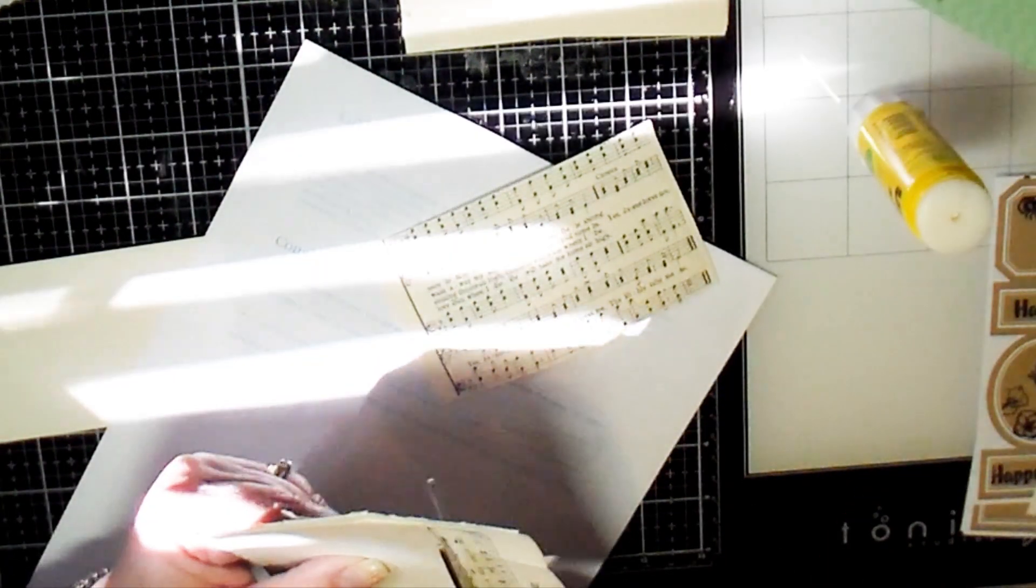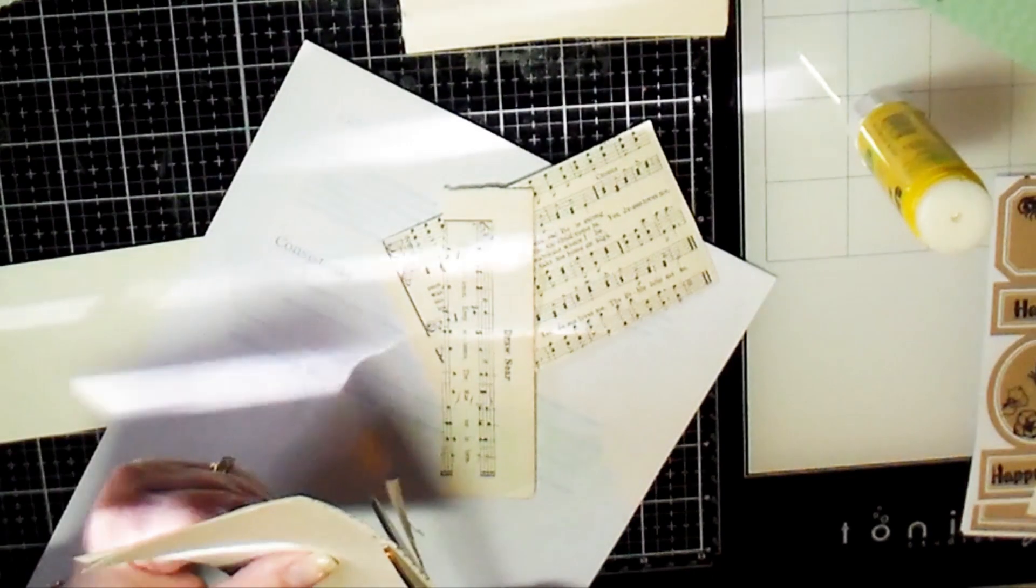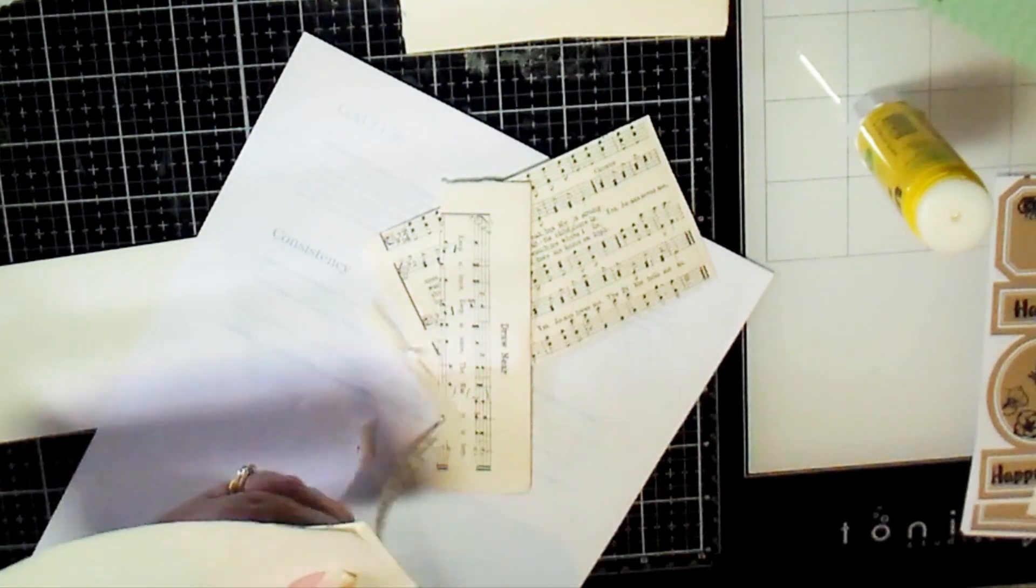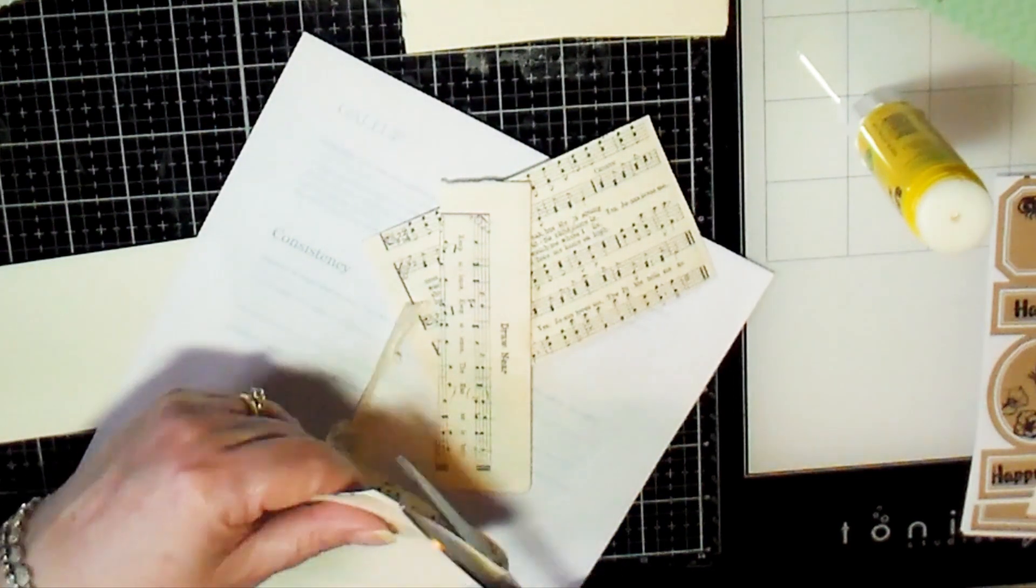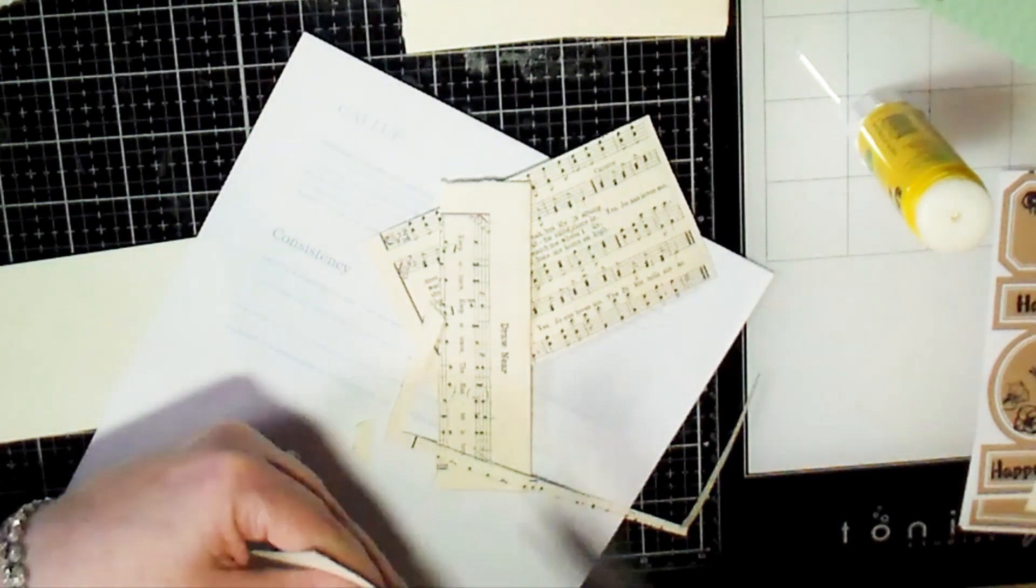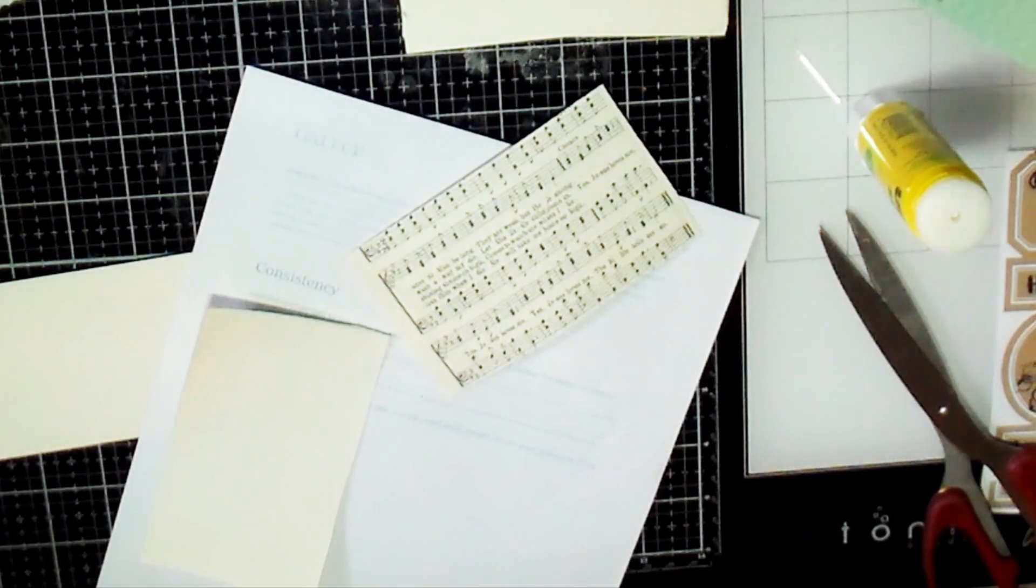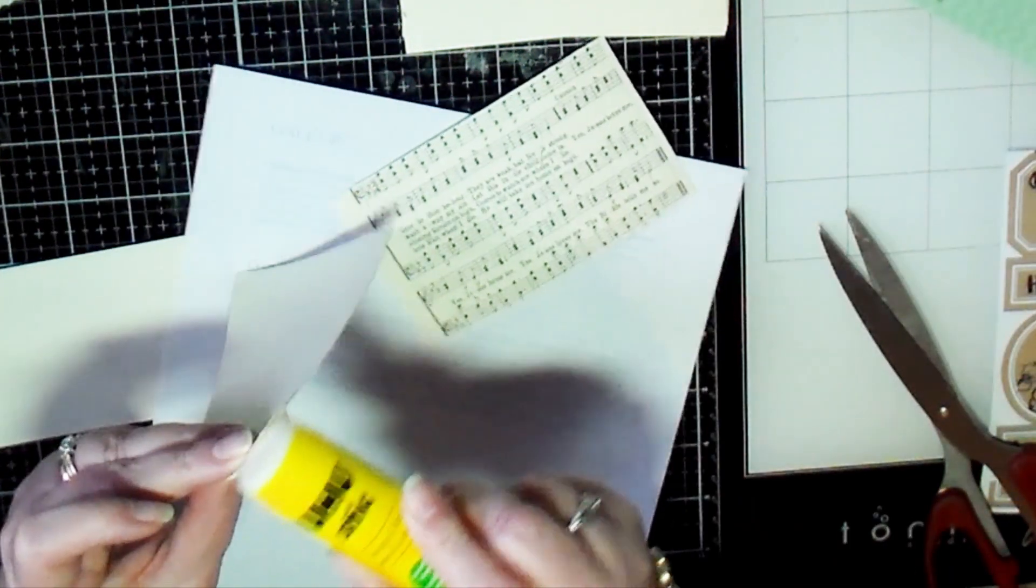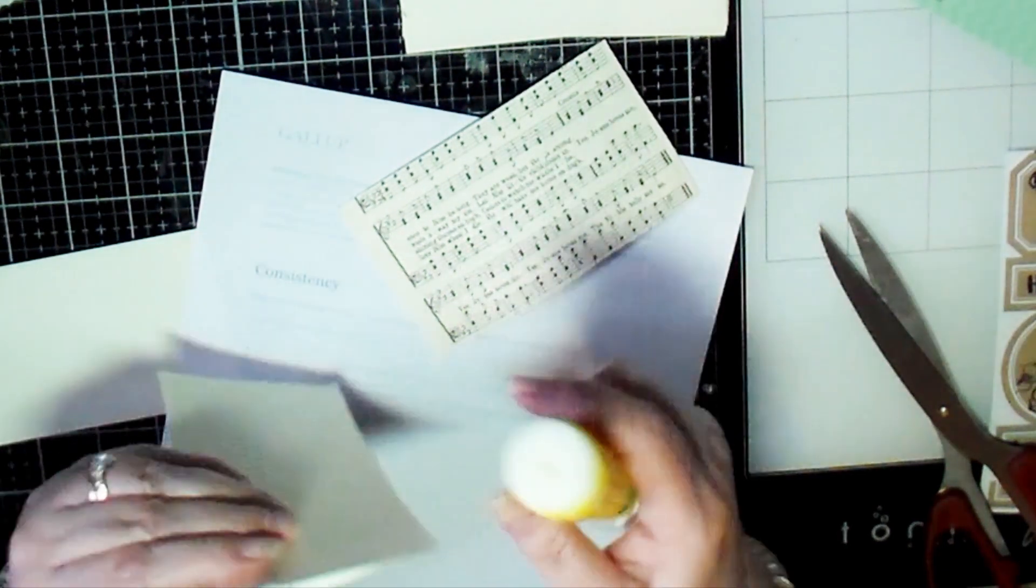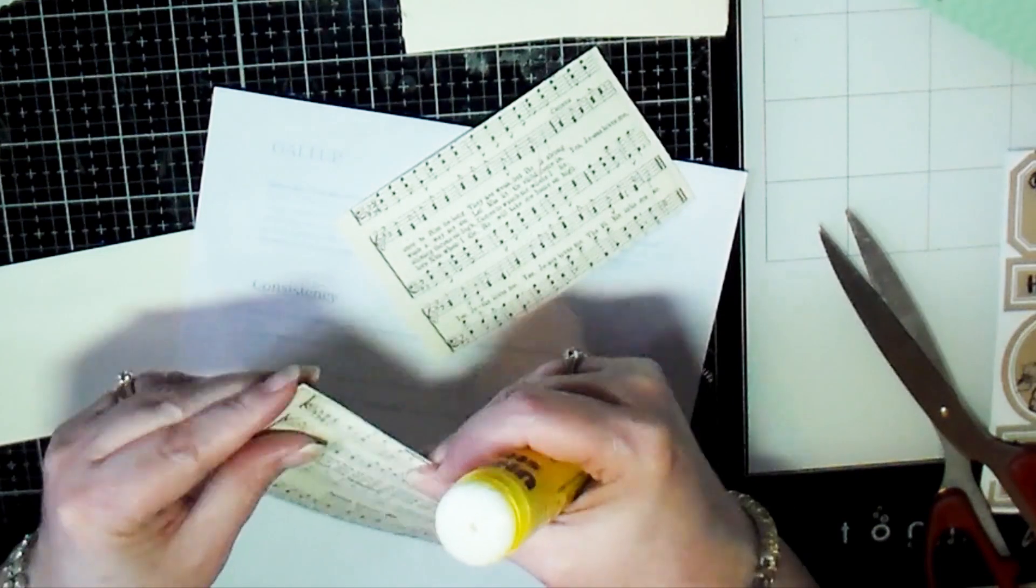I'm using the Uhu glue stick. I guess that's how you say it. I have trouble saying it. It's supposed to be a permanent glue and so far I've not had any problems with it. It's worked pretty good for me, so I enjoy using it. Again, just making sure all of the edges are glued down good, all the corners are glued down really well.